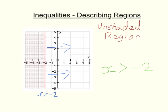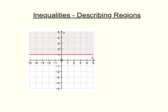This second example is very similar. We give the equation of the line — this time it goes through 1 on the y-axis, so it is y equals 1. We want the unshaded region, which is the bit below that line. That is all the y values that are less than 1, so we have y is less than 1. This time, though, the line is not dashed — it's a solid line. So we have less than or equal to 1: y is less than or equal to 1.